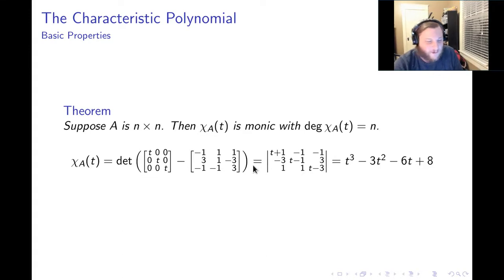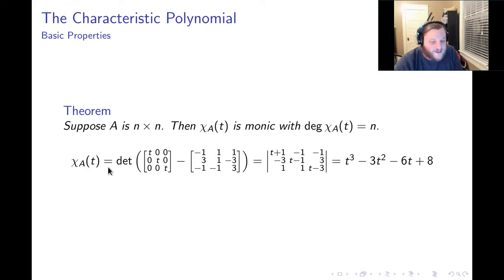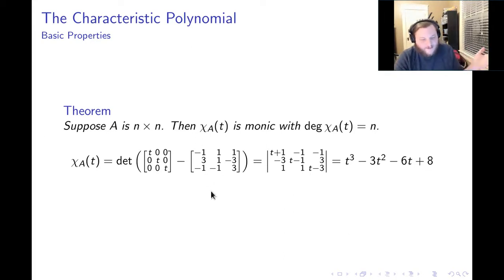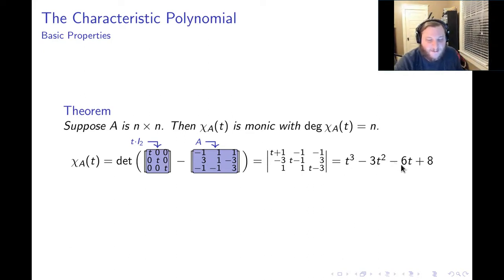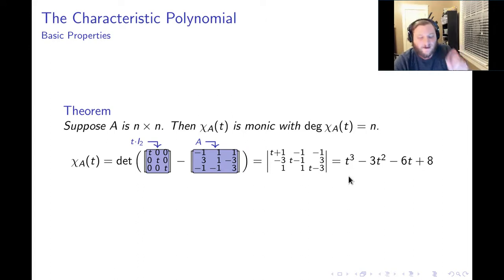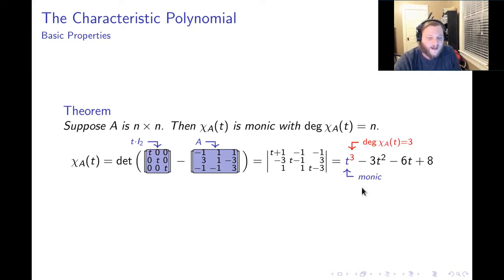Here is a 3 by 3 example. The matrix has columns negative 1, 3, negative 1, then 1, 1, negative 1, then 1, negative 3, 3. The characteristic polynomial is the determinant of T times the identity minus A. We find the characteristic matrix, then calculate its determinant, which gives T cubed minus 3T squared minus 6T plus 8. This matrix was 3 by 3, and its characteristic polynomial is a monic polynomial of degree 3.